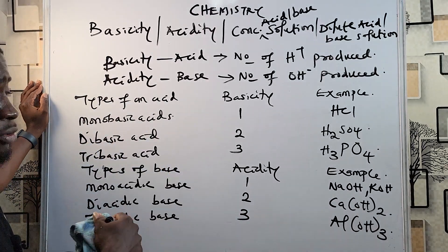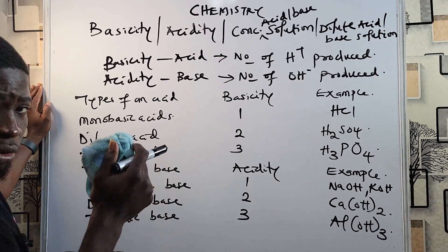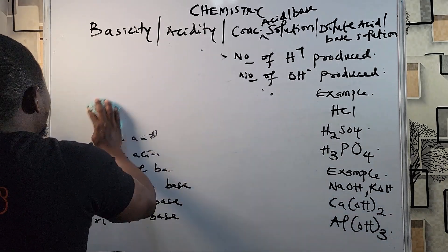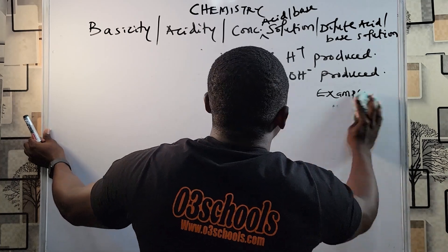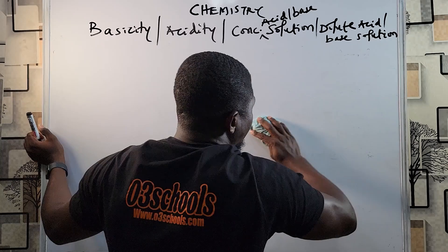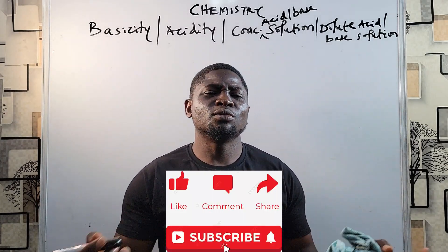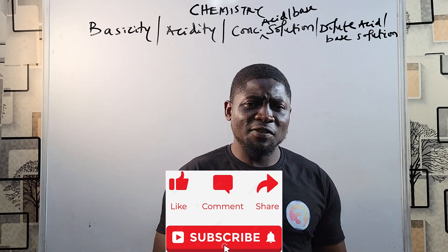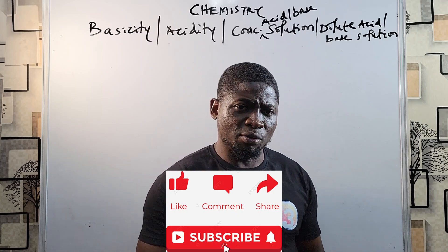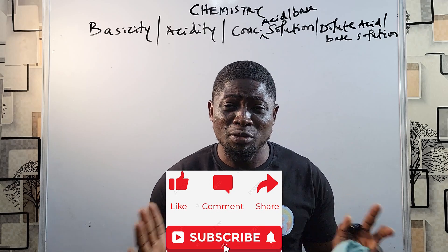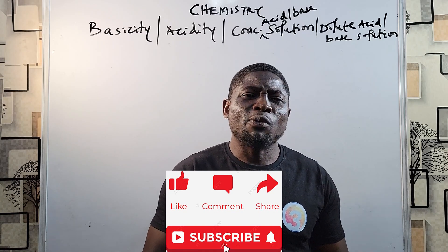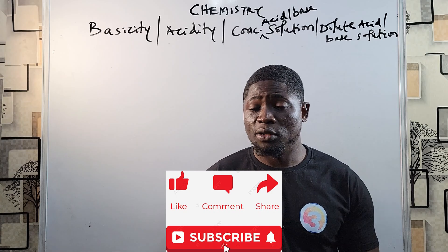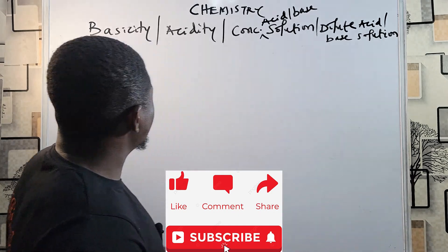So to recap: basicity refers to an acid and the number of hydrogen ions produced, while acidity refers to a base and the number of OH⁻ ions produced. Feel free to rewatch this section. Now, before we continue, please like this video so other students can find it easily, and subscribe to the channel — subscription is free and ensures you're notified when new videos are published.